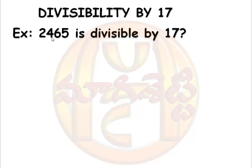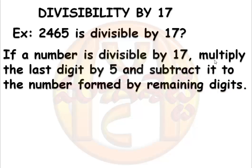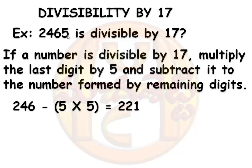Now take divisibility by 17. If we take a number 2465, we check whether it is divisible by 17 or not. The rule is: multiply the last digit by 5 and subtract that result from the number formed by the remaining digits. The rule is different from the previous one. Here the last digit is 5. Multiplying 5 by 5 gives 25; subtracting from the remaining digits 246 gives 221.